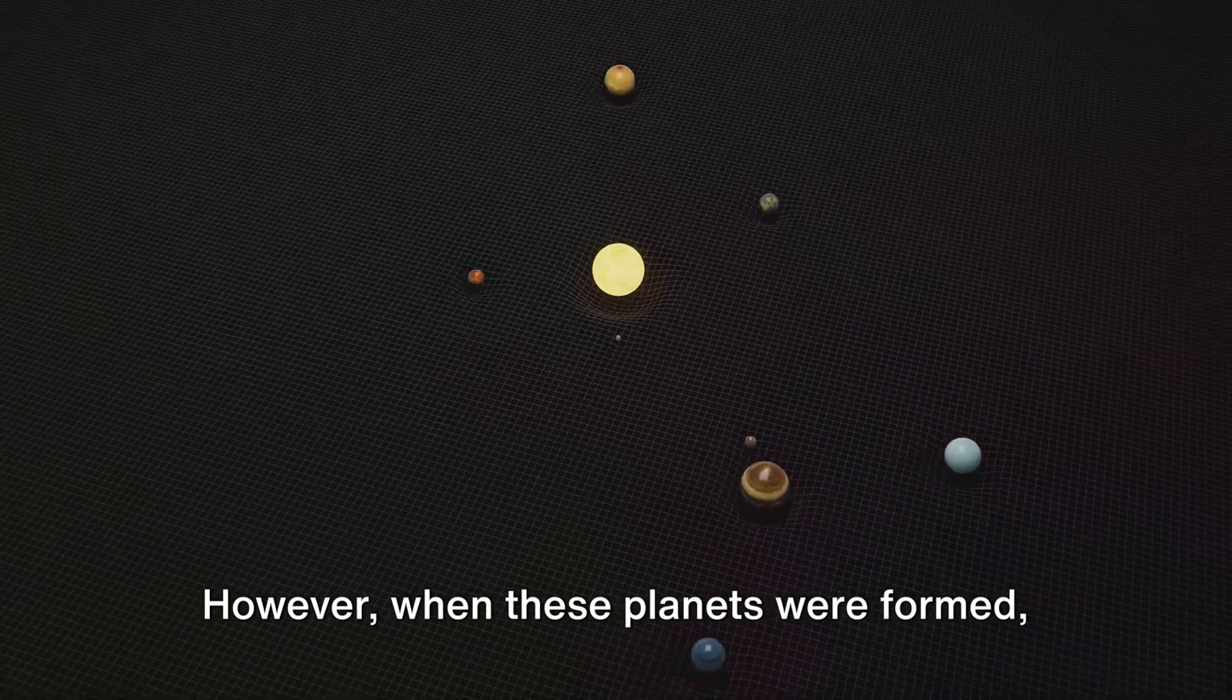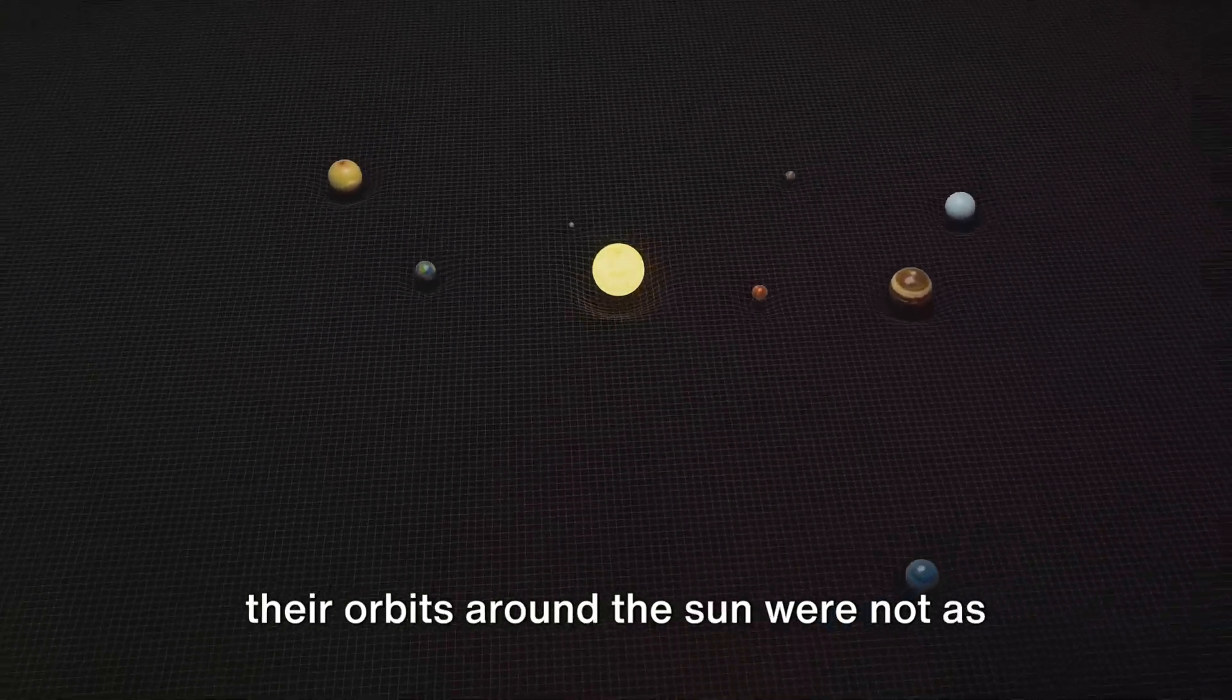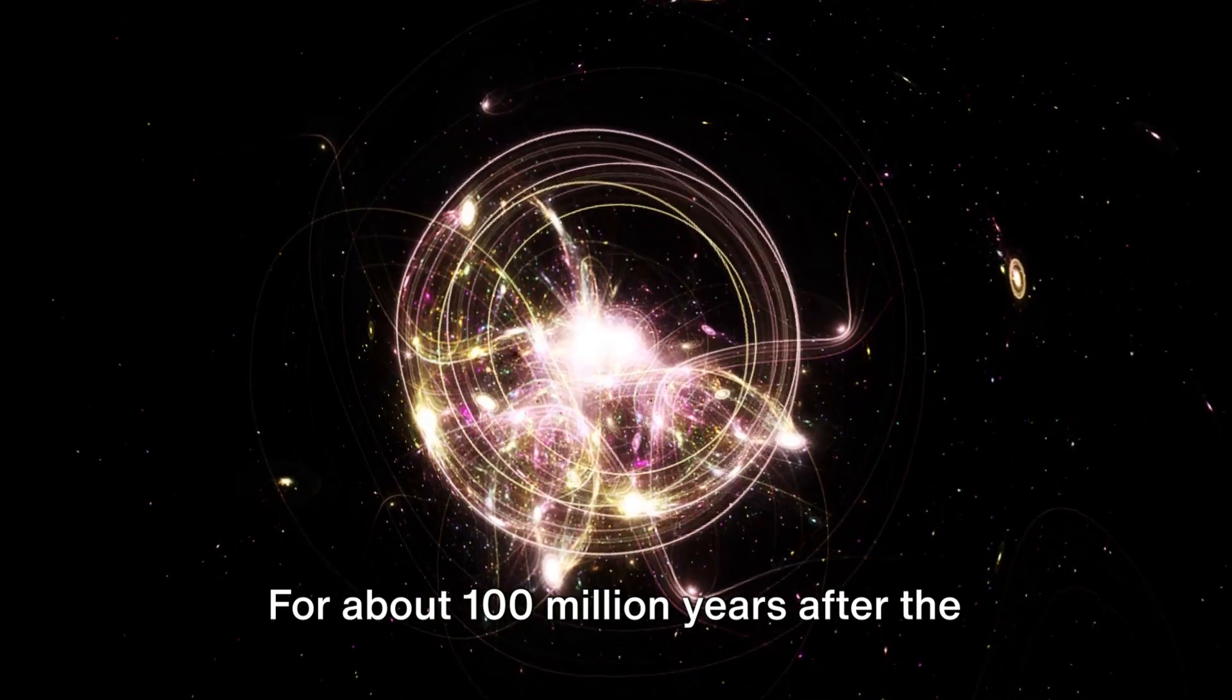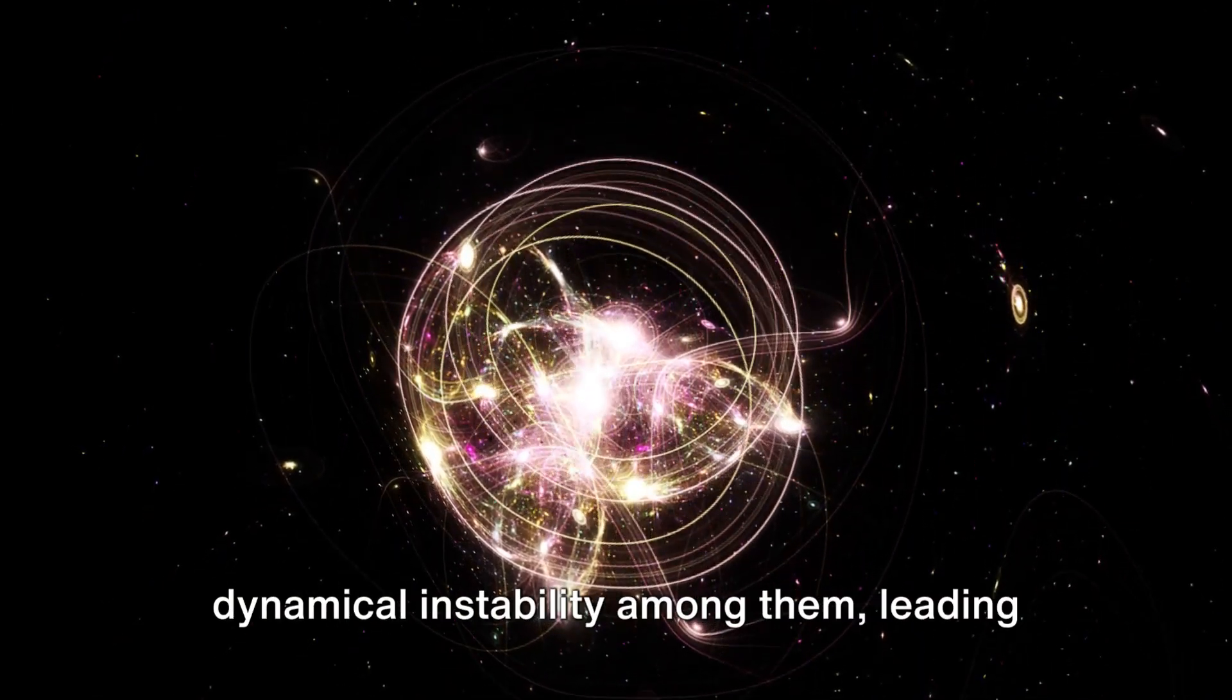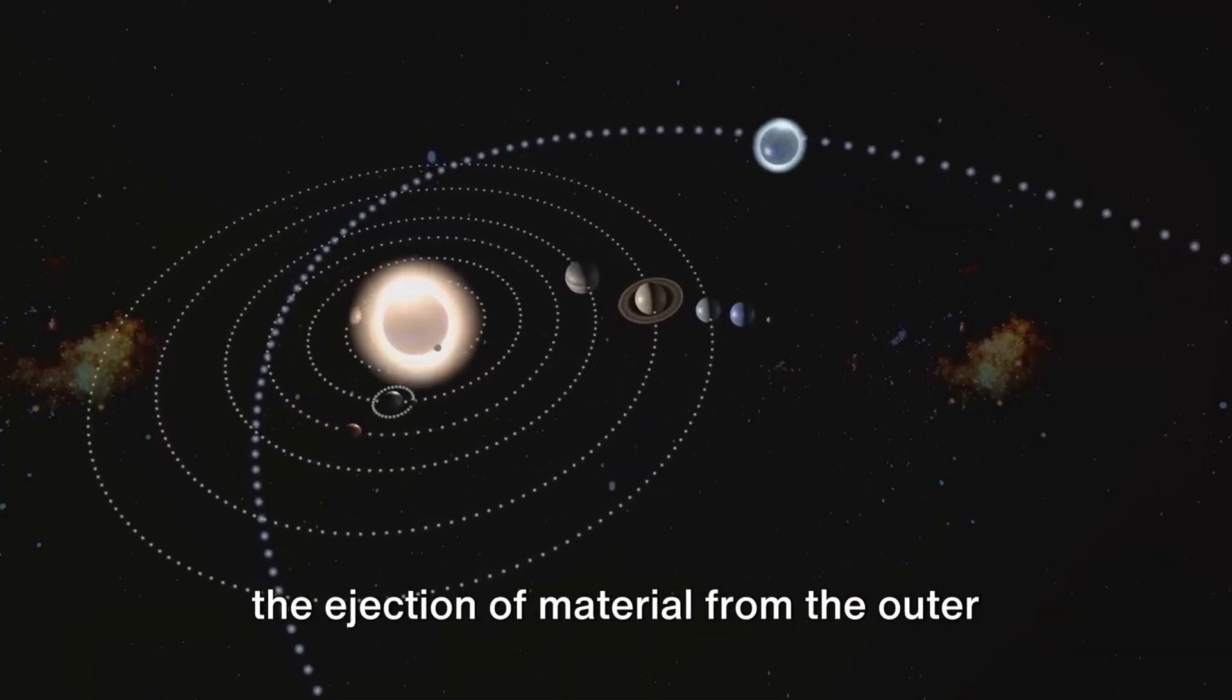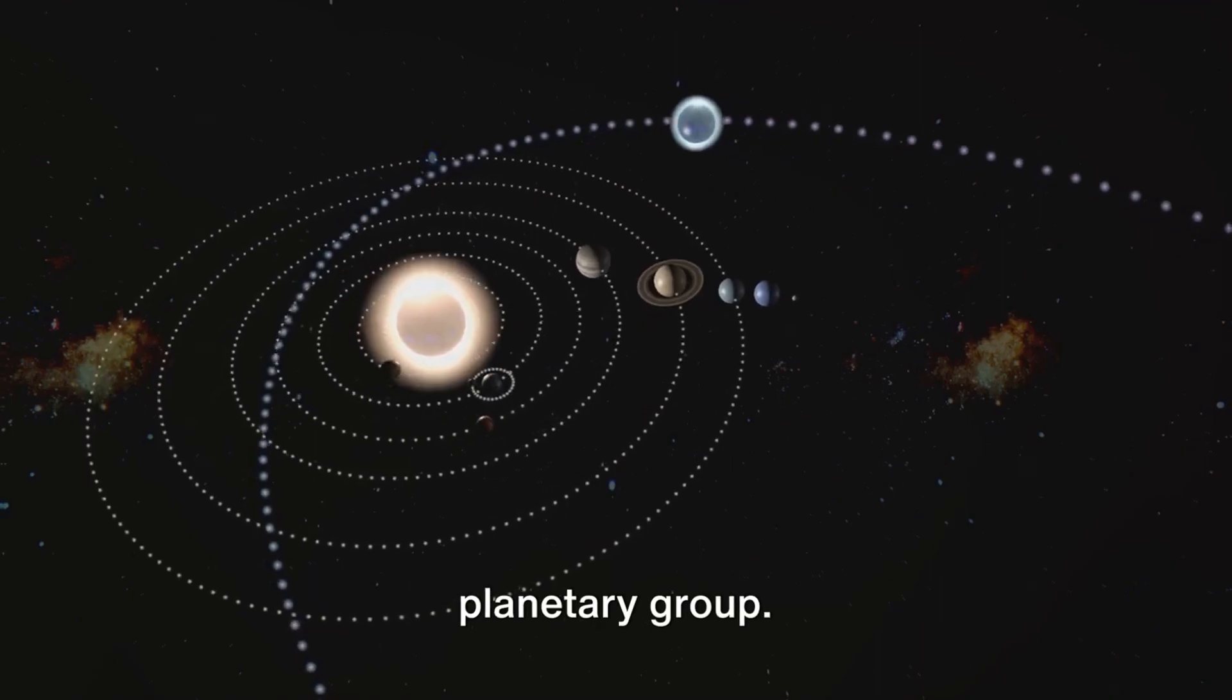However, when these planets were formed, their orbits around the sun were not as stable as they are today. For about 100 million years after the main planets were formed, there was a dynamical instability among them, leading to gravitational interactions that caused the ejection of material from the outer planetary group.